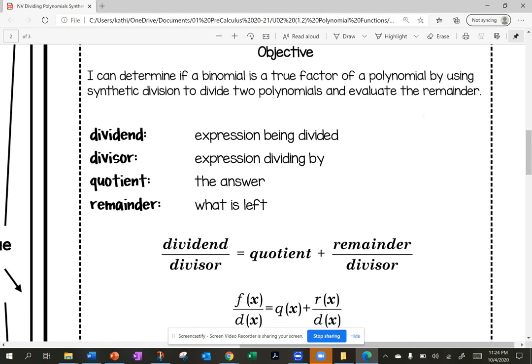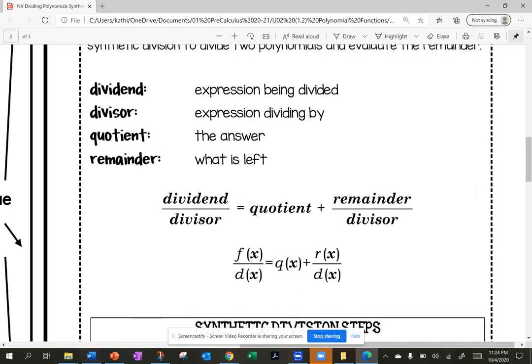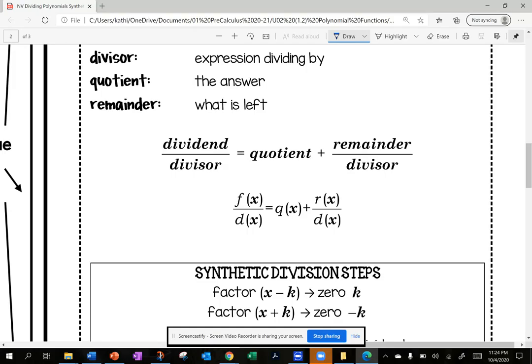Let's review some vocabulary from division. The dividend is the expression being divided. The divisor is the expression I'm dividing by. The quotient is the answer and the remainder is what's left. We show this in the format: dividend divided by divisor equals quotient plus remainder divided by divisor.